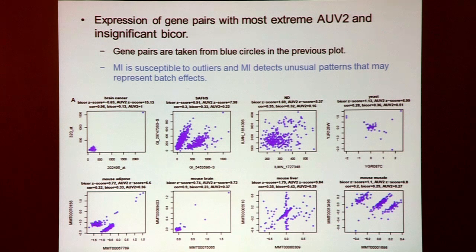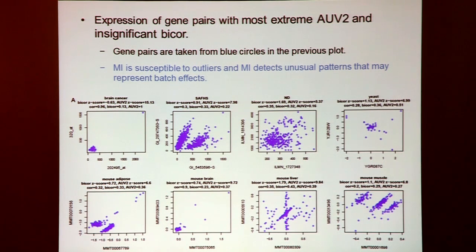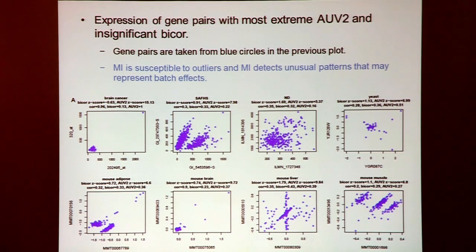Another example shows two genes with a strong dependence pattern, but the bi-core value is only 0.33 — a relatively weak relationship. The pattern looks unorthodox. Another panel shows a cross-shaped dependence pattern. Is this a biologically meaningful gene regulatory relationship or a bizarre artifact? These patterns were not cherry-picked but selected by rankings.